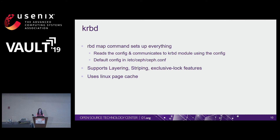In the kernel module, the RBD map command sets up most things. It reads the config file from the default config file location and communicates to the kernel module using the Linux bus interface. The kernel module supports layering, striping, and exclusive lock features. It does not have any specialized cache but takes advantage of the Linux page cache.